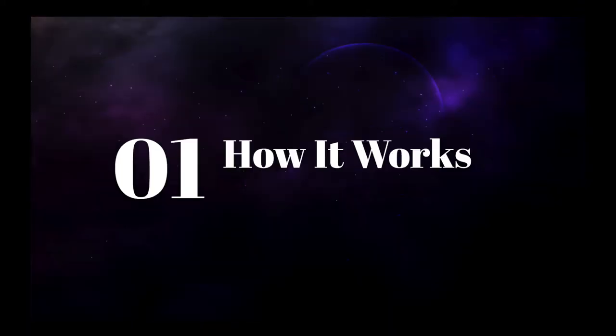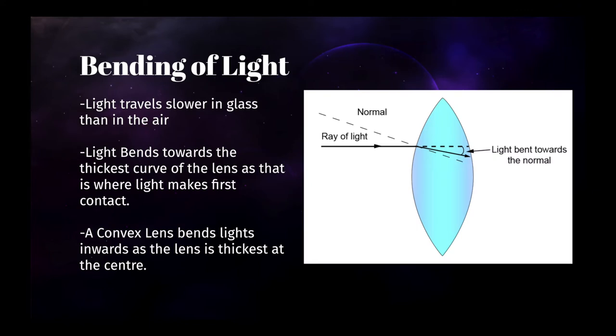Before we go into the history of the telescope, I believe it's important to first understand how the telescope works. Grade 10 physics taught us that when light passes through a lens, it bends. This is because light travels slower in glass than it does in the air. Therefore, it bends towards the direction of the point where the beam of light has first touched the glass.